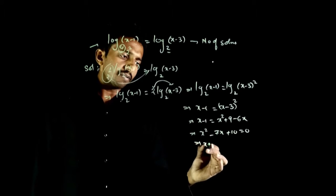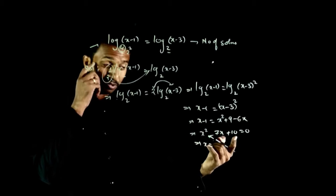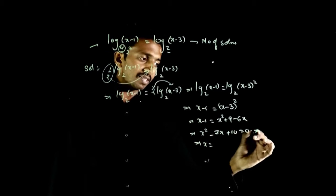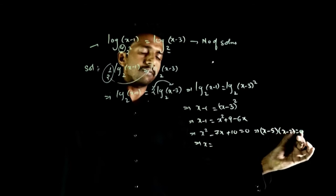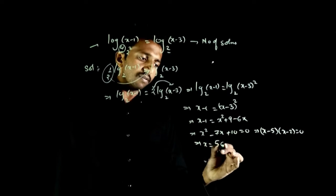Factoring: (x-5)(x-2) = 0. So x equals 5 or 2.